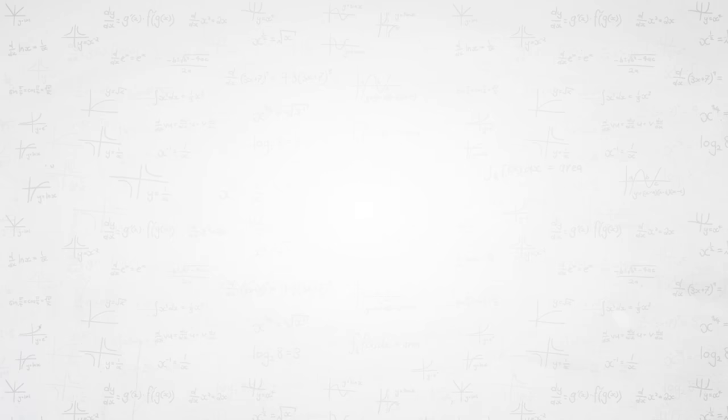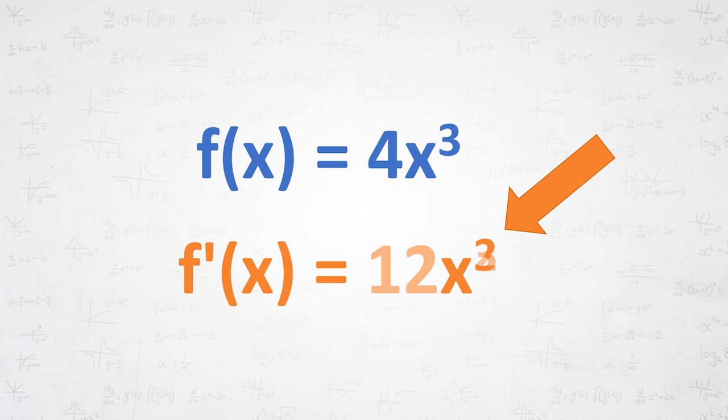Let's start simple, like 4x cubed. Multiply the 4 by the 3. Take off a 1, now it's 12x squared.